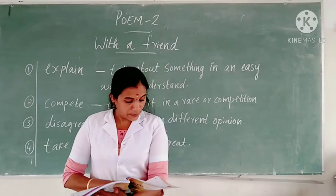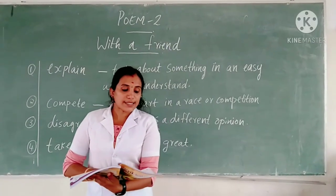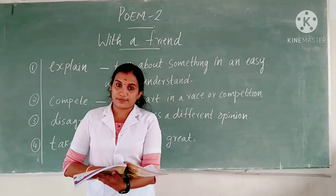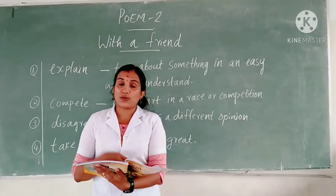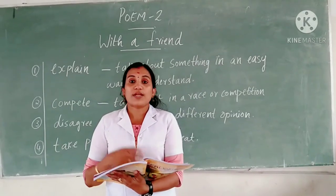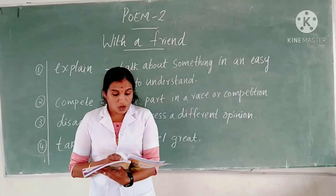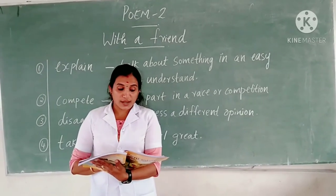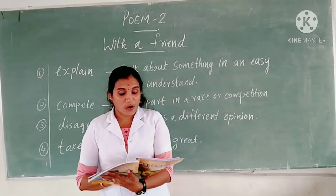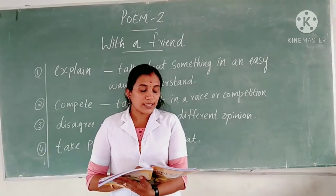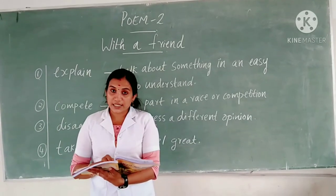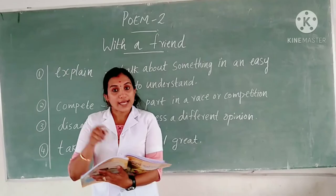Now let's discuss the activities from page number 36. The first one, A: here are seven things you can do with a friend. What can you do with your friends? You can play, walk, stay, or study with your friend. The words are: talk, walk, play, stay, learn, eat, ride. Find these words in the grid. You can see a table, so find out these words and circle them.